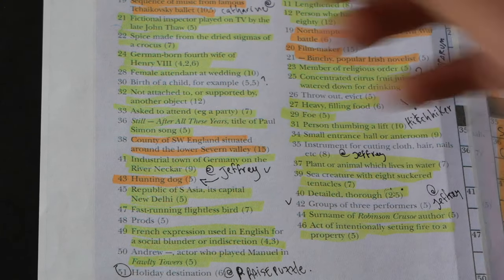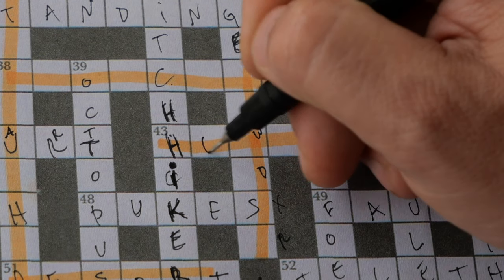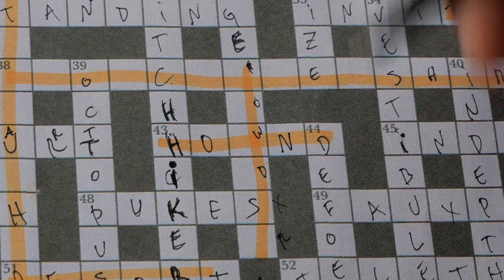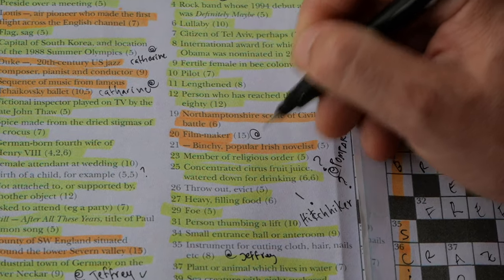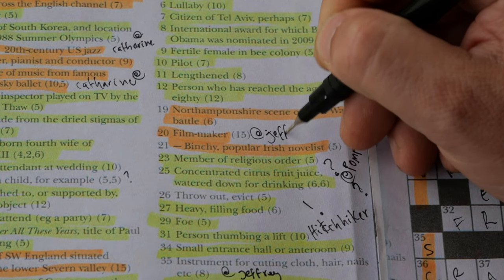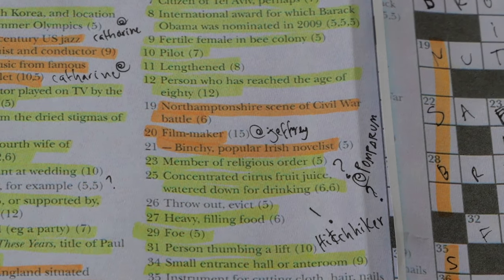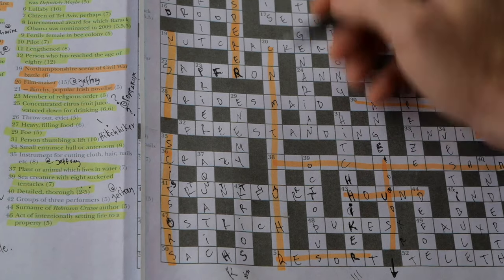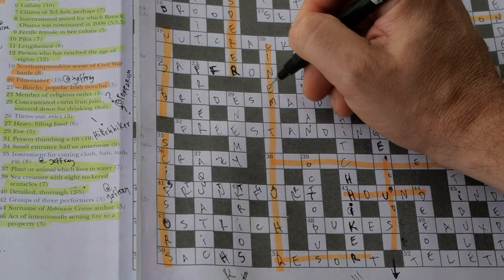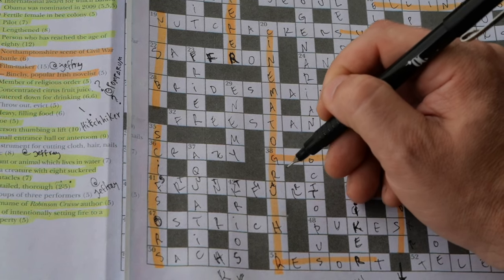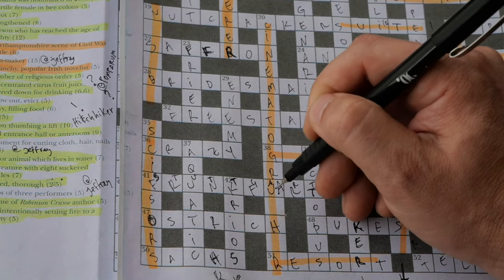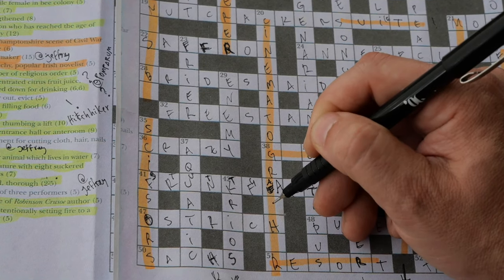Jeffrey also suggested 43 across would be Hound, a hunting dog. Another suggestion also by Jeffrey is number 20 down, filmmaker, which would be Cinematographer, which by the way will fit perfectly with everything else in this part of the puzzle. Thank you very much, Jeffrey.